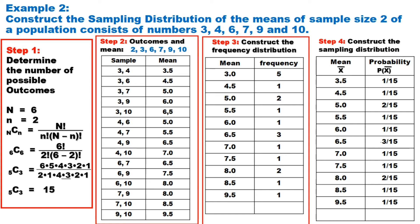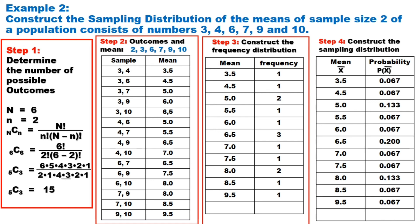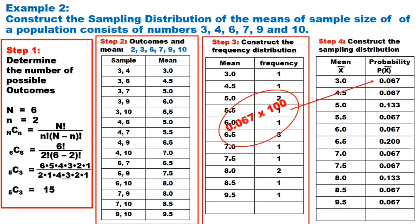In step 4, construct the sampling distribution. The first column is the mean, and the second column is the probability — first expressed as a fraction. The numerator is the frequency and the denominator is the total number of samples, which is 15. Aside from fractions, probability can also be expressed as decimal — just divide the numerator by its denominator. Probabilities can also be expressed in percent. To change decimal to percent, multiply by 100 and affix the percent sign. The shorter way is to move the decimal point two places to the right. So 0.067 becomes 6.7 percent.